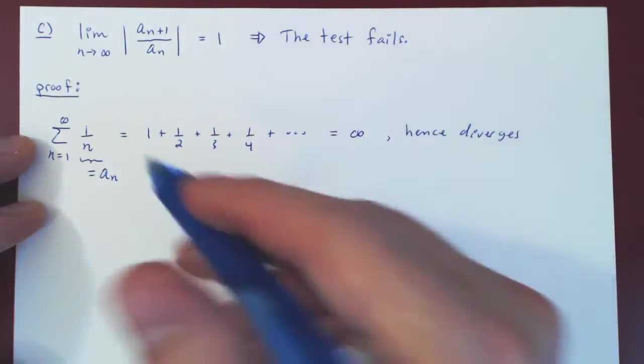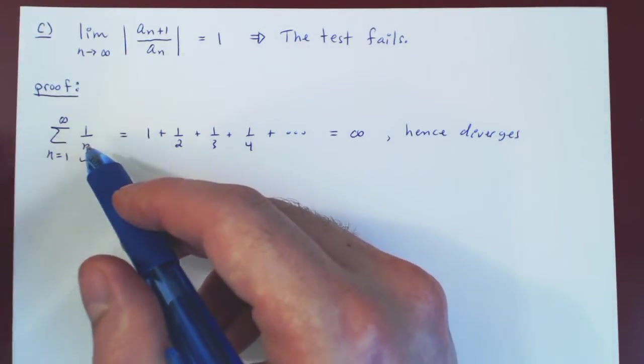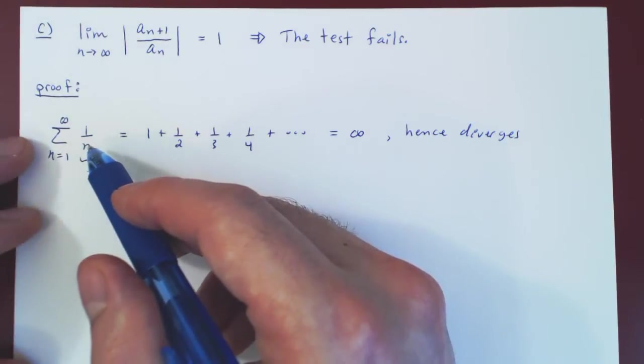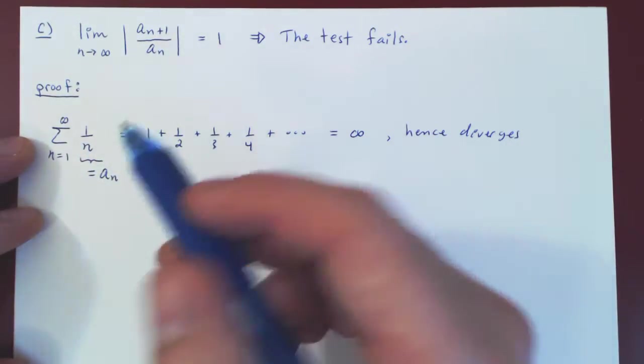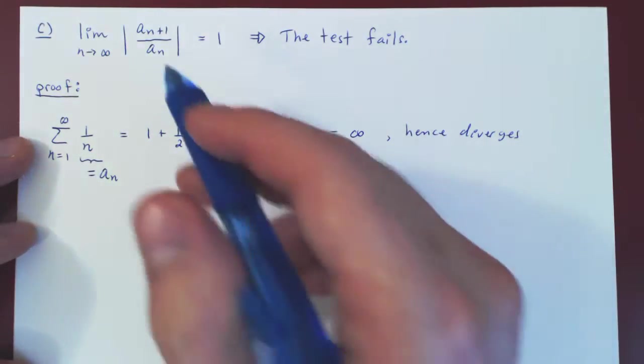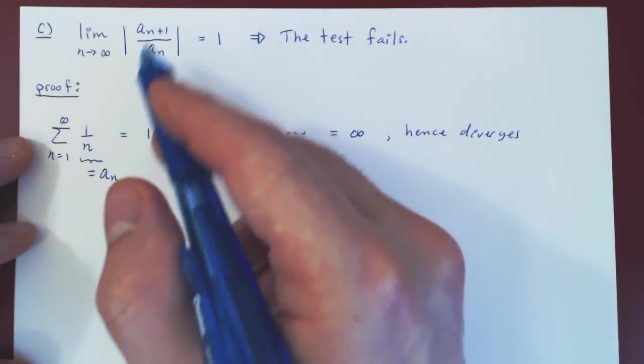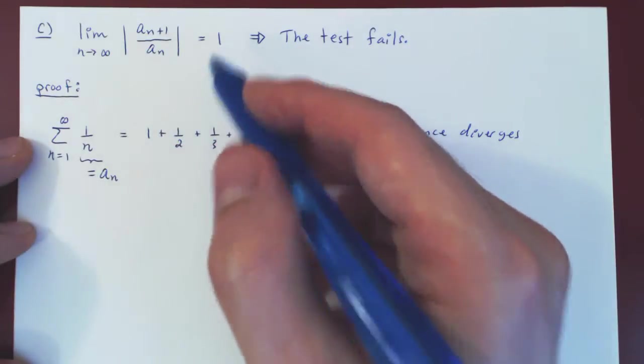Or of course you can look at it as a P-series with P equals 1, but P-series only converge if P is strictly larger than 1. Because 1 is not larger than 1, then the P-series diverges. Let's show that the limit of a_{n+1} over a_n in absolute value is indeed equal to 1.